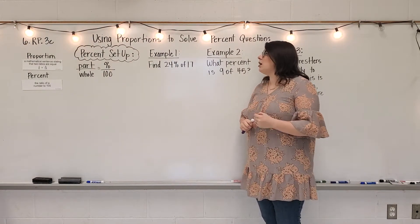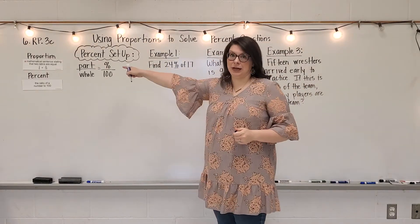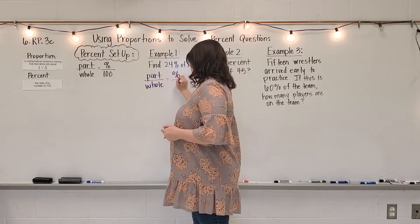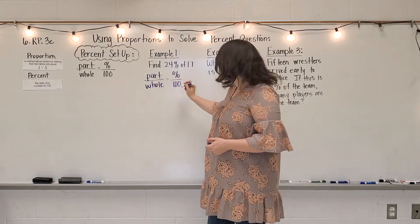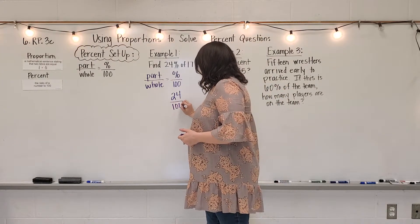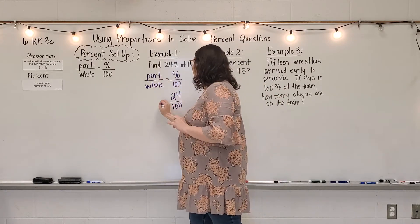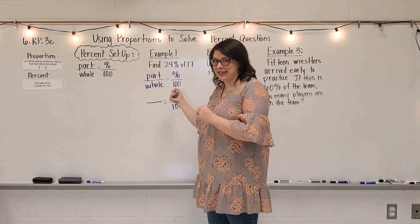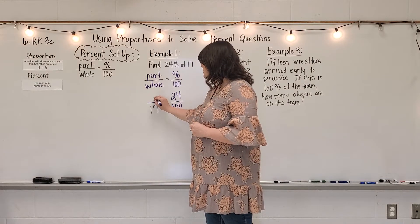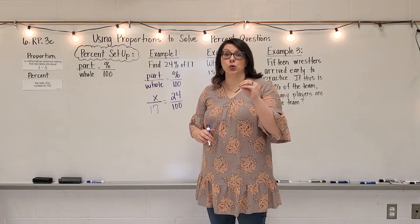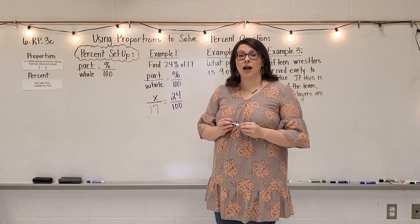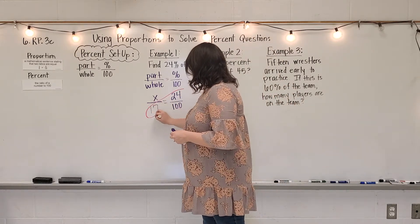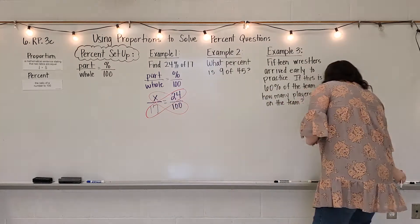Let's get into our examples. It says find 24% of 17. Automatically I'm writing down: part over whole equals percent over 100. I fill in what I know — 24 is the percent, so 24 over 100. Now I need to figure out what I'm looking for: the part out of 17. So 17 is my whole and I'm looking for what part of 17 equals 24 out of 100. We cross multiply: 17 times 24 and 100 times x.